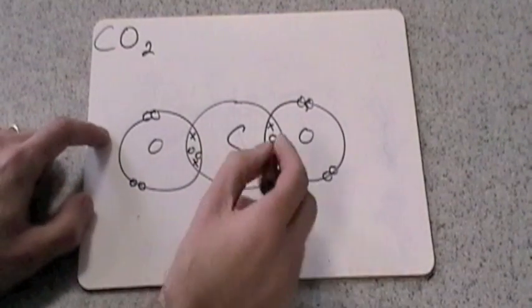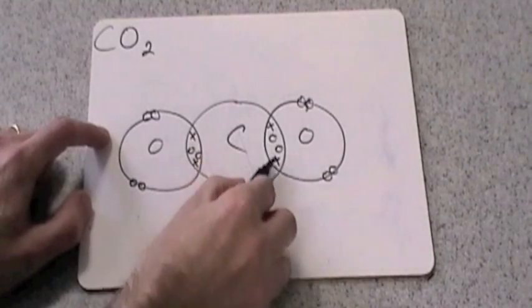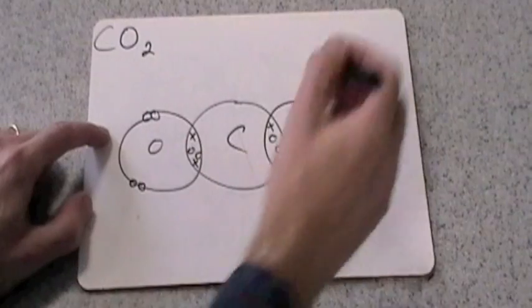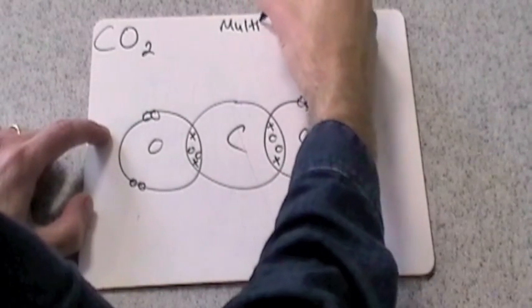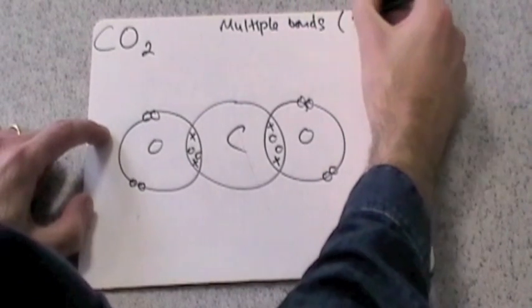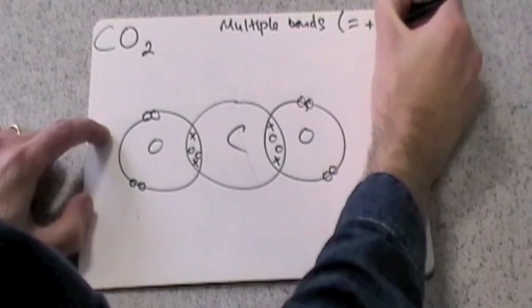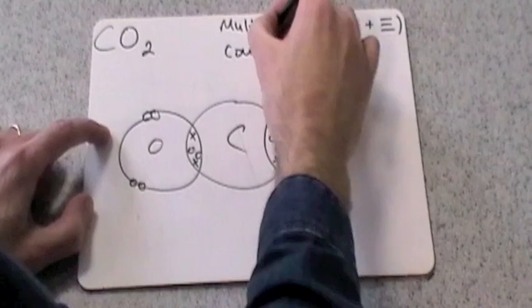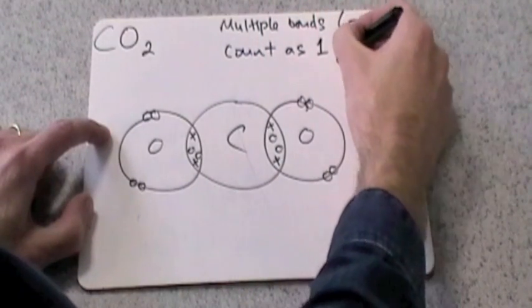Now if you count these up, it looks like you've got - well it doesn't just look like, you have got - one, two, three, four pairs of electrons. However, multiple bonds, so that's double bonds and triple bonds, they count as one pair of electrons.